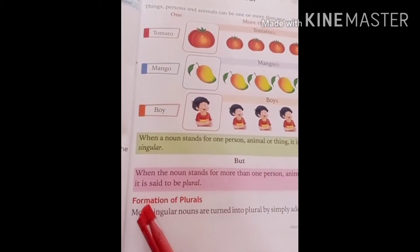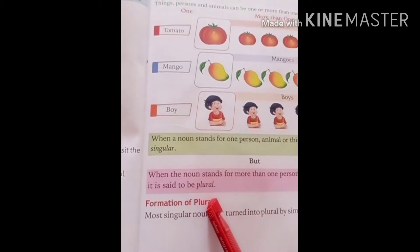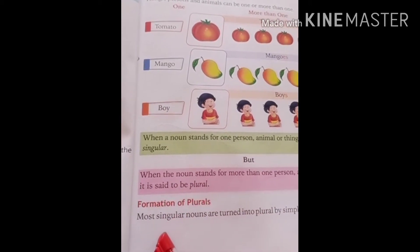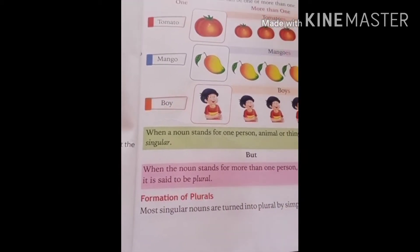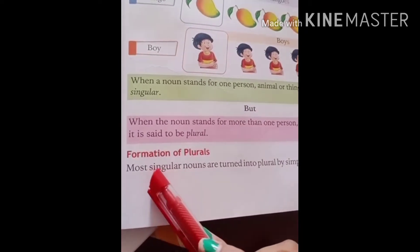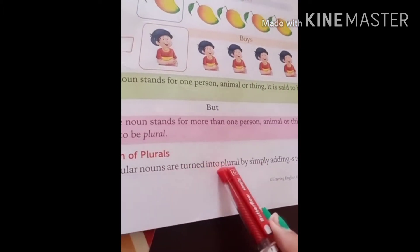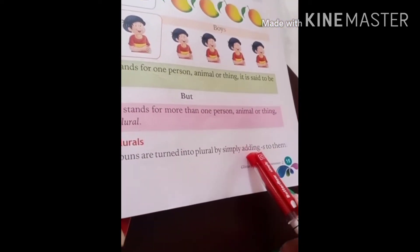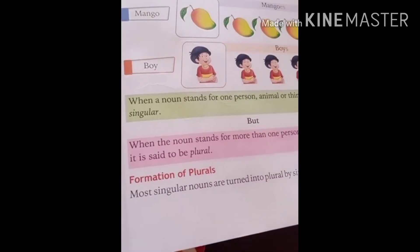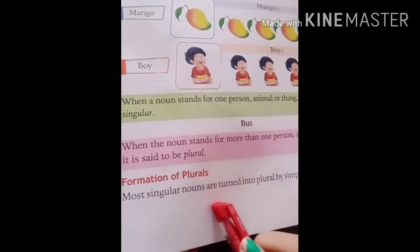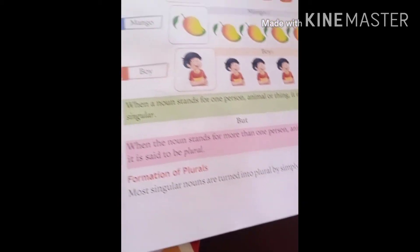Now, the formation of plurals. How do plurals form? Most singular nouns are turned into plural by simply adding 's' to them. There are so many singular nouns that we make plural this way.